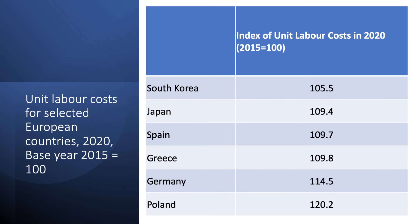Unit labour cost data is nearly always presented in index number format, and it's a common short-answer question in exams and assessments. Here are six countries and their unit labour cost index in 2020: South Korea, Japan, Spain, Greece, Germany, and Poland. The data shows quite a difference in labour cost increases. In South Korea, over a roughly five-year period, unit labour costs have risen by less than 6%, whereas in Poland there's been a 20%-plus increase in unit labour costs.